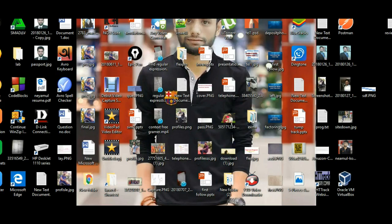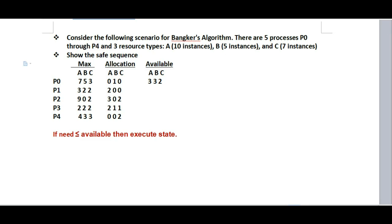Hello friends, I'm going to explain the Banker's Algorithm in operating systems. Consider the following scenario for Banker's Algorithm: There are five processes P0 through P4, and three resource types - A with 10 instances, B with 5 instances, and C with 7 instances. We need to show the safe state sequence.